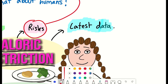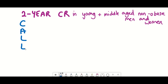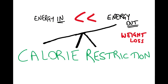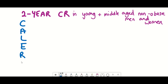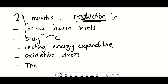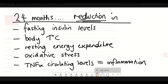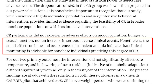You need to look at data, and lots of it. CALERIE is an acronym — Comprehensive Assessments of Long-term Effects of Reducing Intake of Energy. I made a video on this back in 2019 from a 2015 paper. After 24 months of calorie restriction in young and middle-aged non-obese men and women, they saw a reduction in fasting insulin levels, a reduction in body temperature, reduction in resting energy expenditure and oxidative stress, and lower TNF-alpha circulating levels — TNF-alpha being a marker of inflammation. The study did point out that small effects on bone and occurrences of transient anemia indicate that clinical monitoring is advisable for non-obese individuals practicing this degree of calorie restriction.